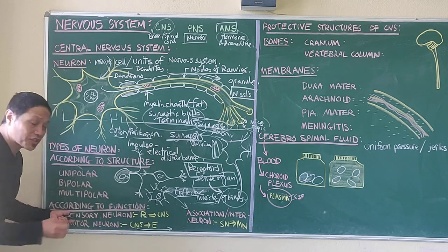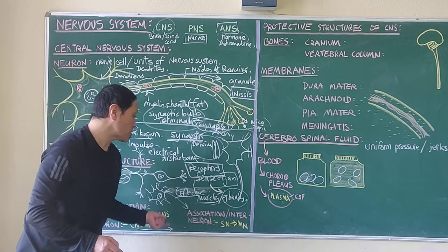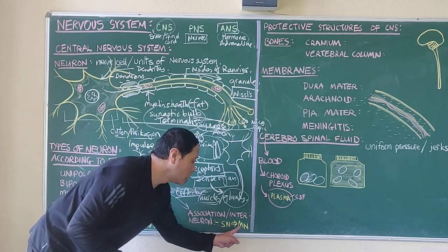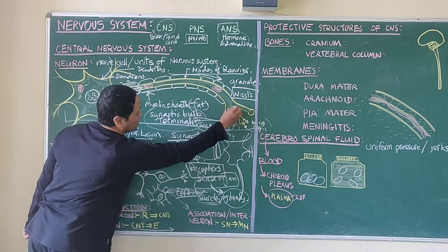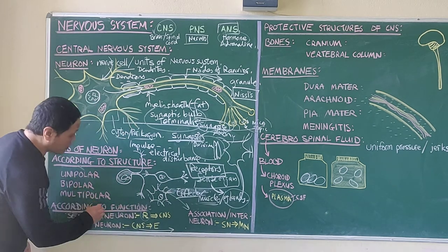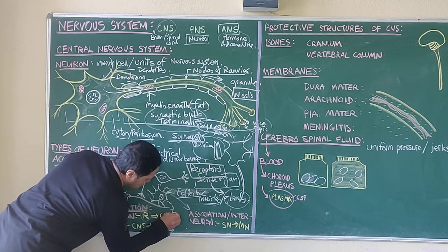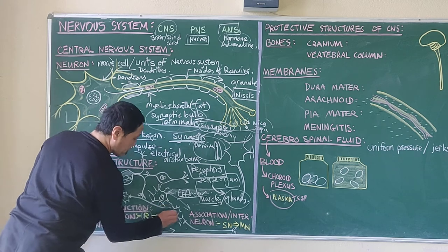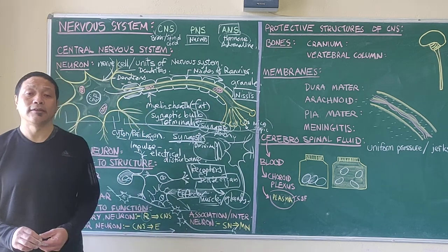According to function: sensory neurons carry impulses from receptors to the CNS; motor neurons carry impulses from the CNS to the effectors — muscles or glands; and association neurons connect a sensory neuron with a motor neuron. Association neurons do not have long elongated axons — they just connect the sensory neuron to the motor neuron within the CNS.